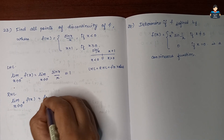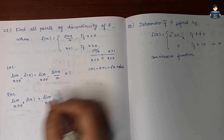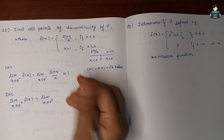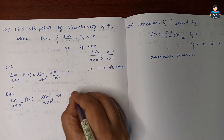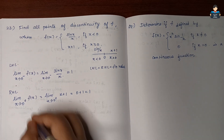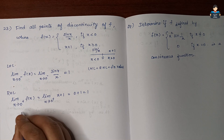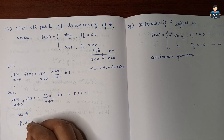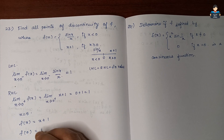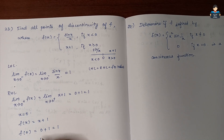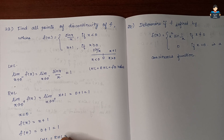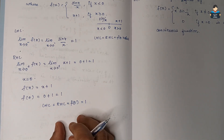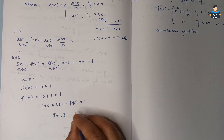Next, the Right Hand Limit: limit as x tends to 0⁺ of f(x) = limit as x tends to 0⁺ of (x + 1), since x > 0 uses the second piece. This gives 0 + 1 = 1. The function value at x = 0: f(0) = 0 + 1 = 1.